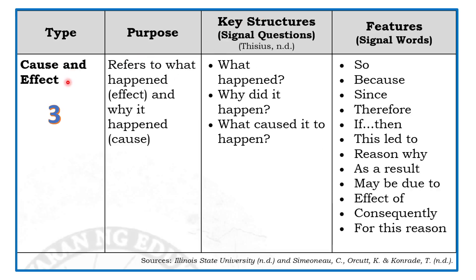The next type is Cause and Effect. Its purpose is to explain what happened — that is the effect — and why it happened — that is the cause. Signal questions include: What happened? Why did it happen? What caused it to happen? Signal words include: because, since, therefore, if-then, this led to, reason why, as a result, may be due to, effect of, consequently, and for this reason.